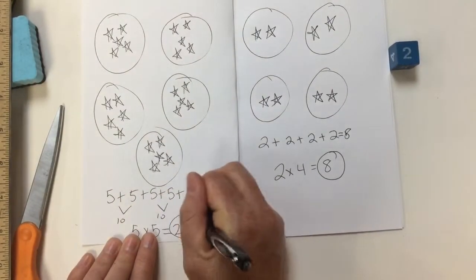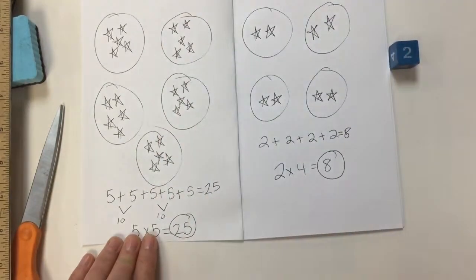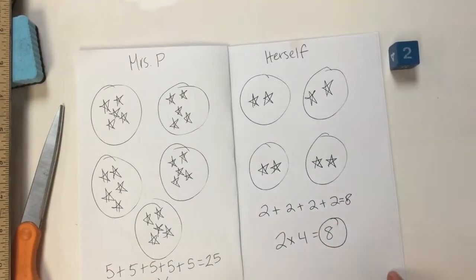And this is how many points Mrs. P scored this round. And now you just keep playing until you run out of pages.